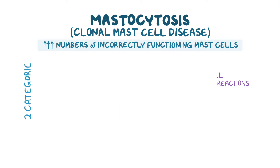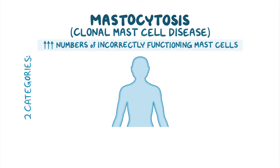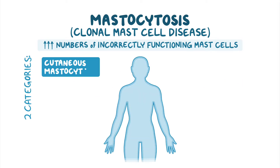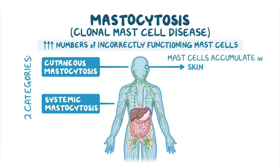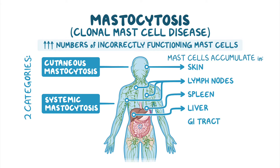There are two main categories of mastocytosis. In cutaneous mastocytosis, the mast cells accumulate only in the skin. In systemic mastocytosis, mast cells also accumulate in other tissues like the liver, spleen, lymph nodes, gastrointestinal tract, and most commonly, bone marrow.